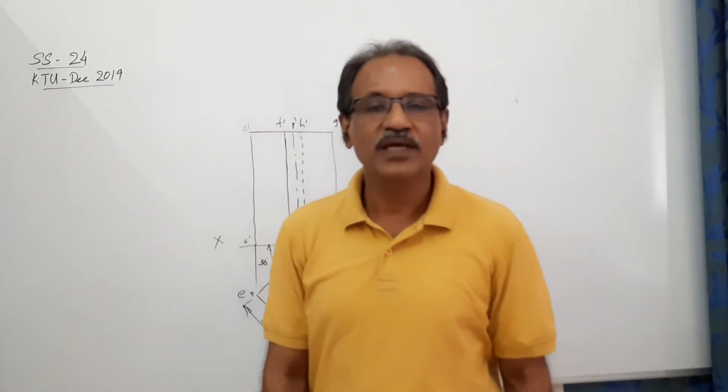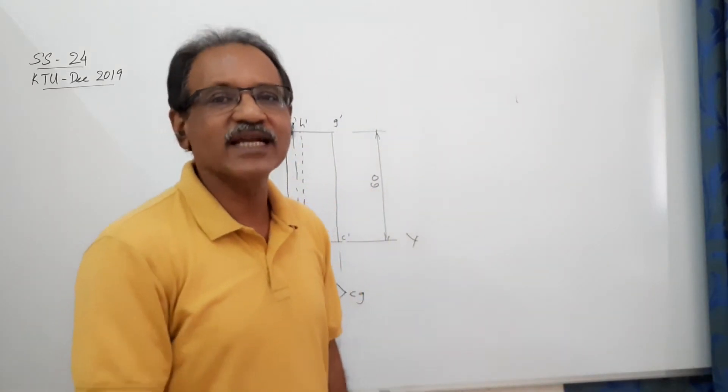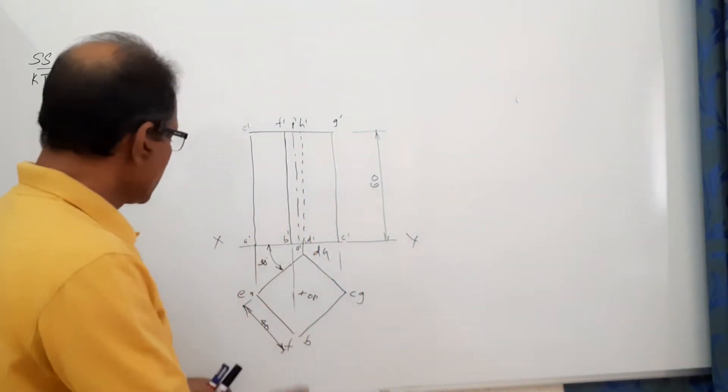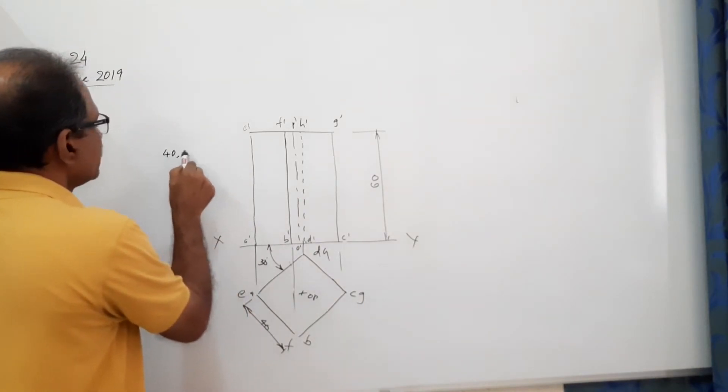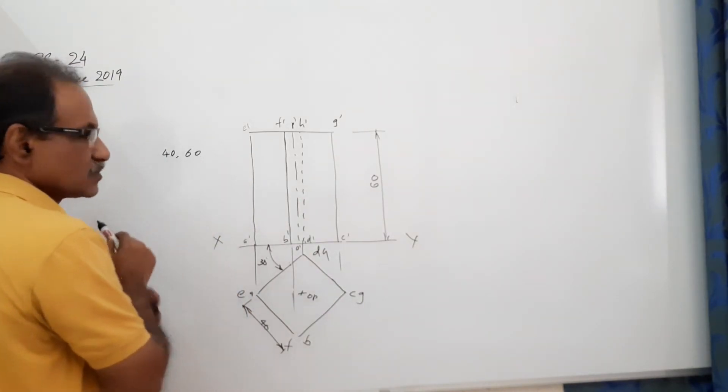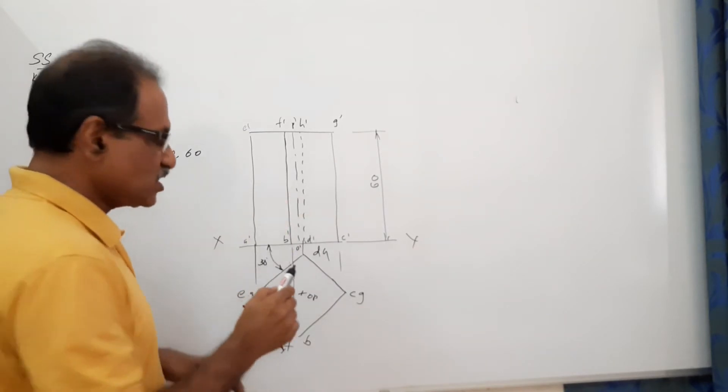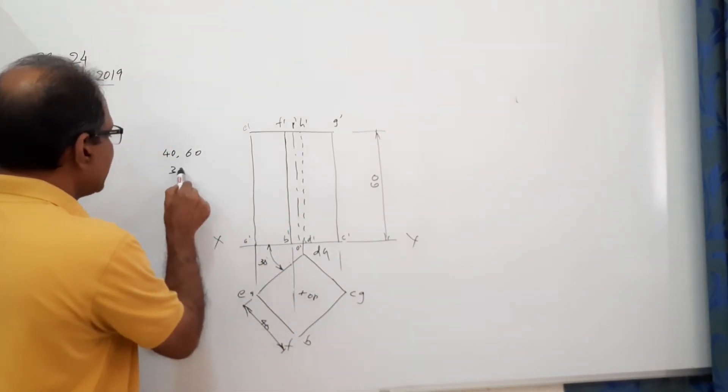The question is about a vertical square prism, 40mm side, 60mm height, resting on HP on edge space with a side of base making 30 degrees to VP.